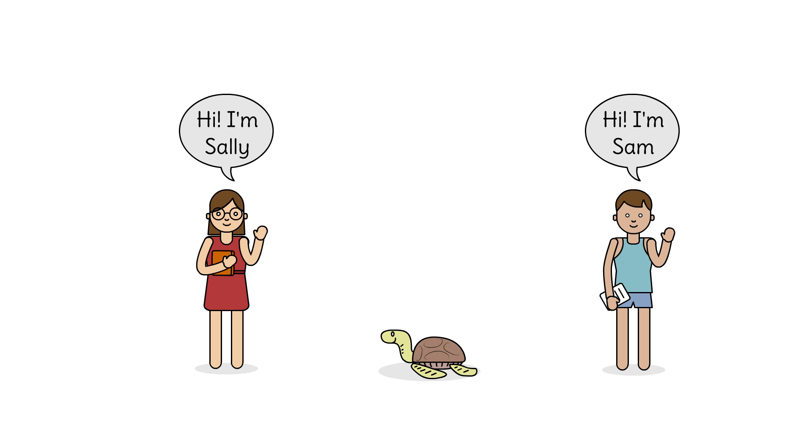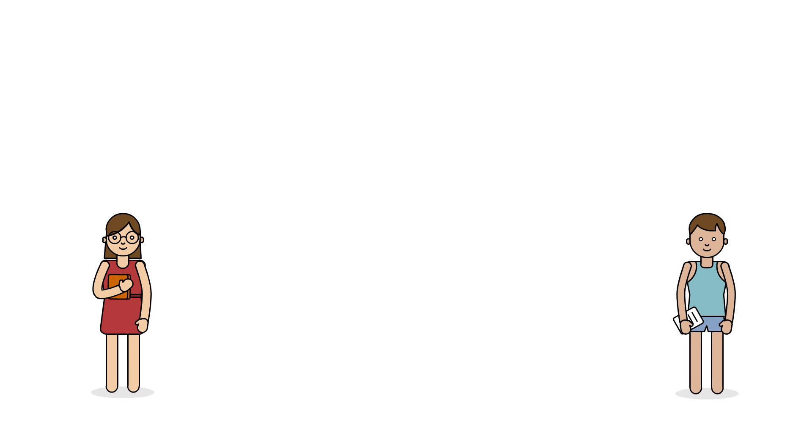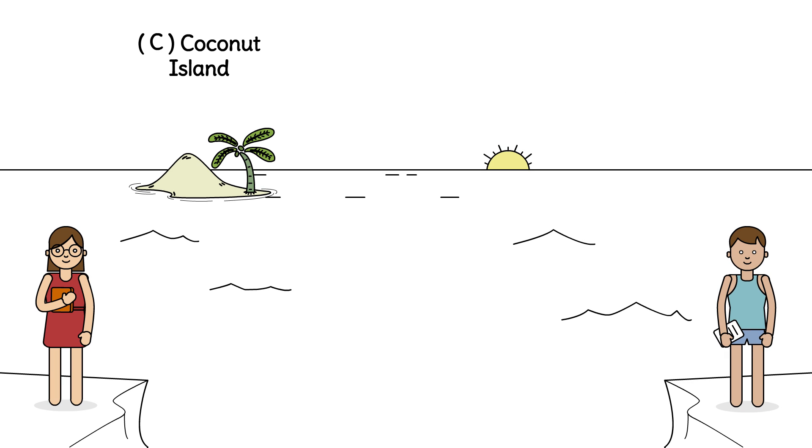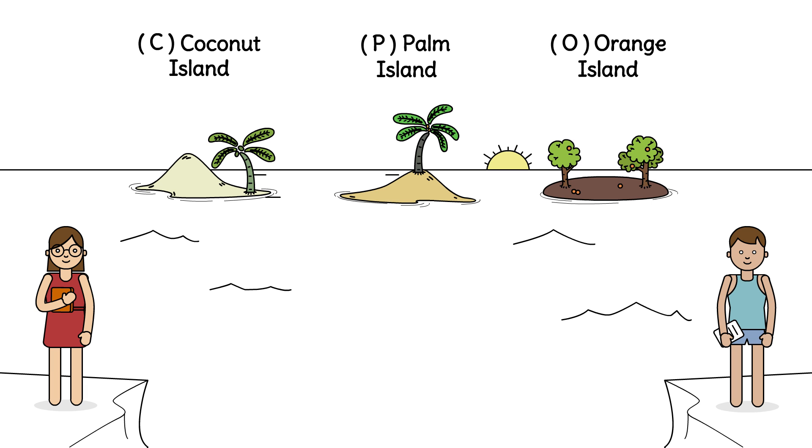Sally and Sam are studying turtles who are colonizing the many islands of the Florida Keys. They are studying three islands: Coconut Island, Palm Island, and Orange Island.